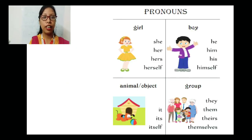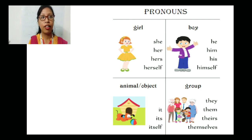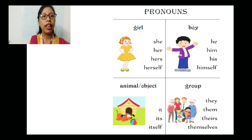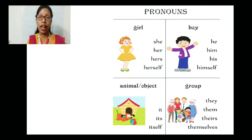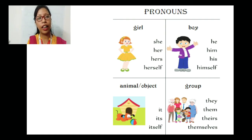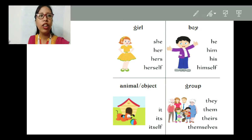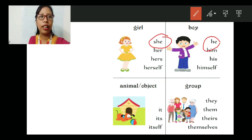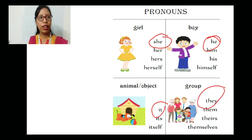Now let's look at this chart of pronouns. For a girl, we use she, her, hers, and herself. For a boy, we use he, him, his, and himself. For an animal or object — because we don't know whether it is male or female — we use it, its, and itself. And for a group, we use they, them, theirs, and themselves. But right now, you only need to remember she, he, it, and they.